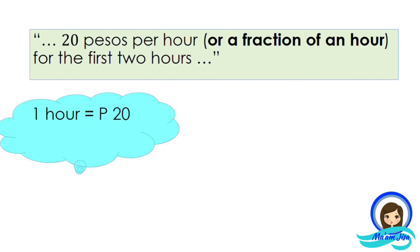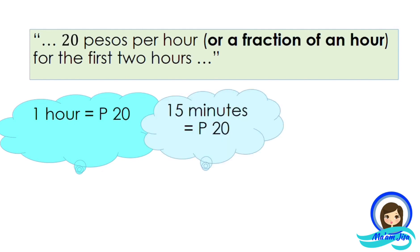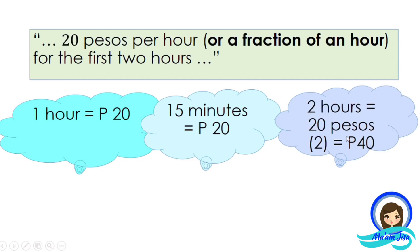The first equation represents 20 pesos per hour or a fraction of an hour for the first two hours. If you use one hour, you are charged 20 pesos. What if it's only 15 minutes? You still pay 20 pesos, because the problem specifies 'or a fraction of an hour.' Whether you use 5, 10, 15, 30, 45, or even 59 minutes, you are still charged 20 pesos — a fraction of an hour is equivalent to one hour.